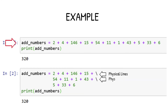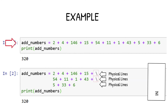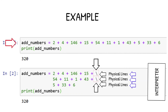For example, multiple numbers can be added in a single-line statement, but to improve readability we can break the expression into multiple physical lines by using the backslash symbol at the end of each physical line. When the Python interpreter reads this expression, it evaluates the first physical line, and when it finds the backslash, it moves to the second physical line and evaluates it as the same logical line. This continues for the third physical line as well.